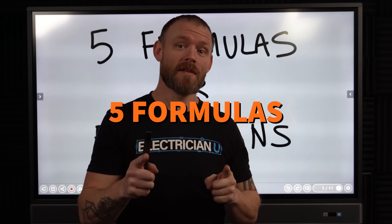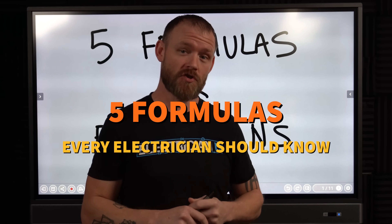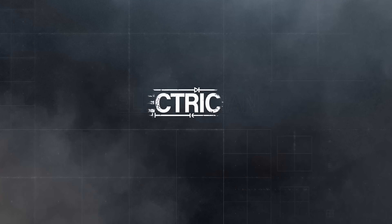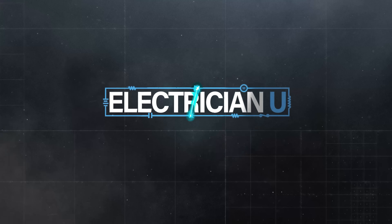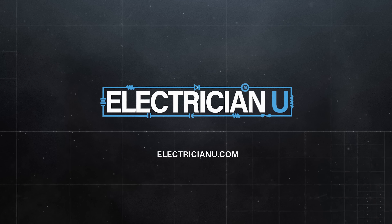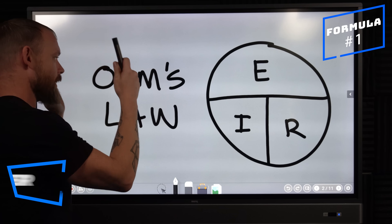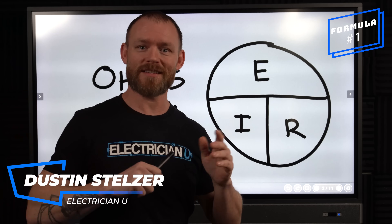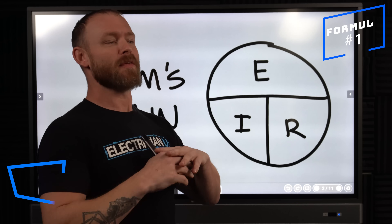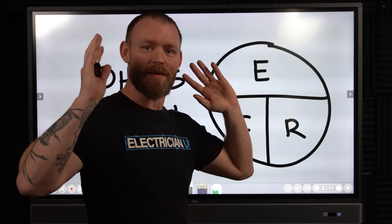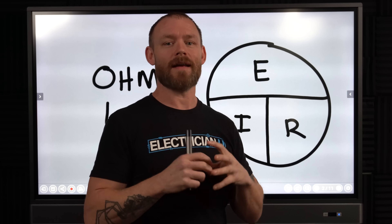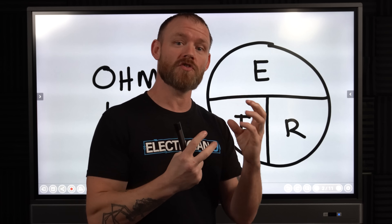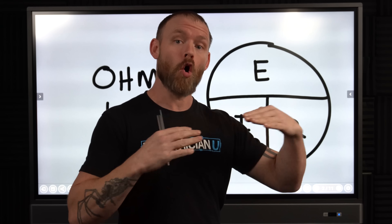Here are five formulas every electrician should know. Number one is Ohm's Law. Most electricians know this like they know nothing else with math. Ohm's Law is specifically the relationship between voltage, amperage, and resistance only.